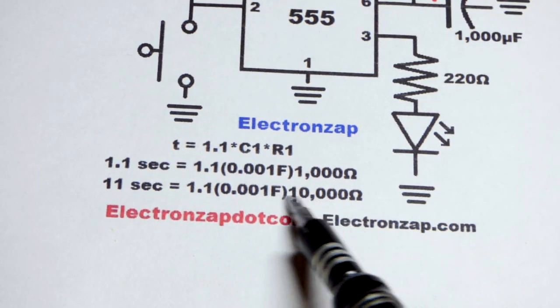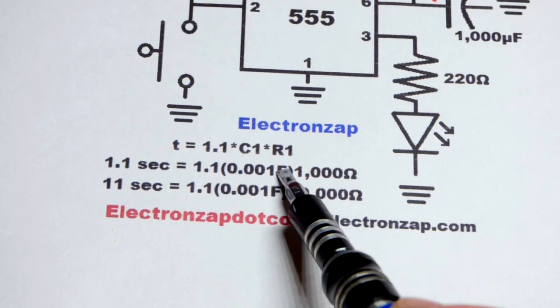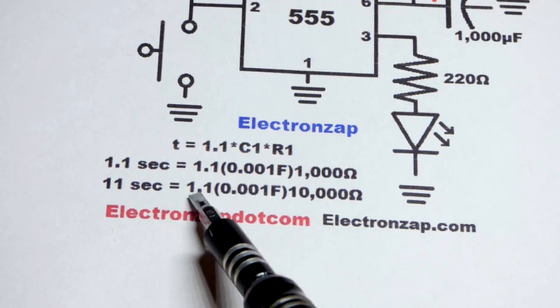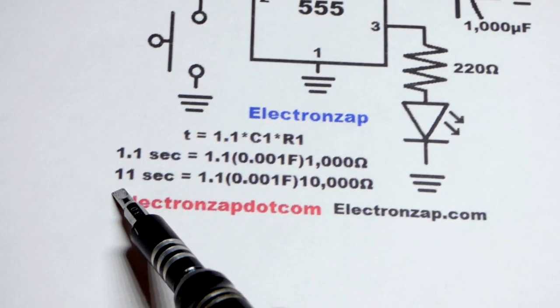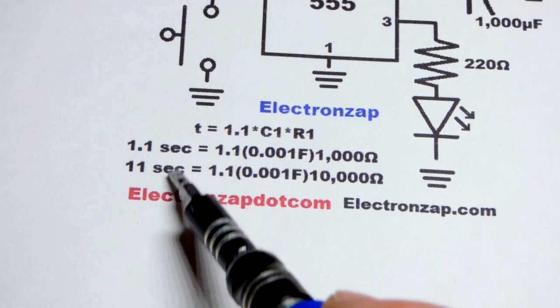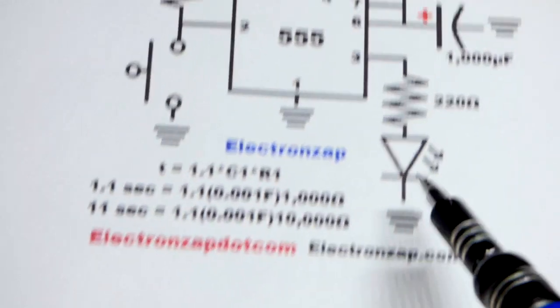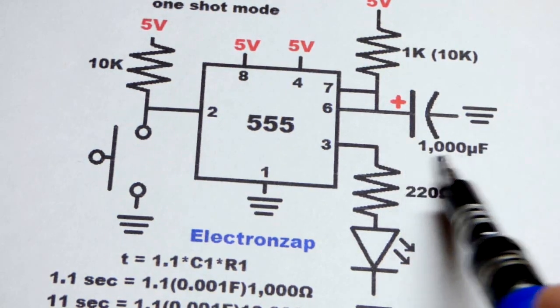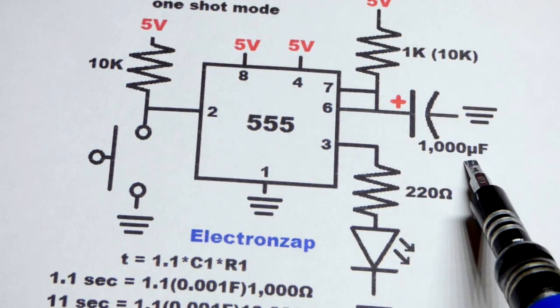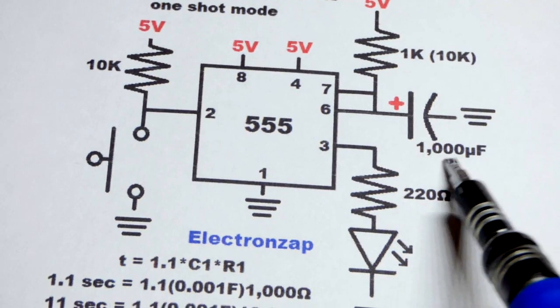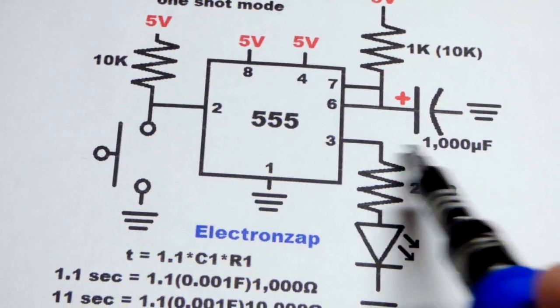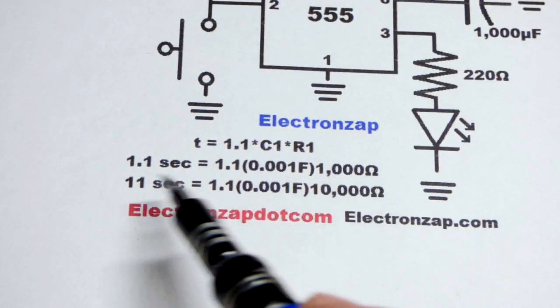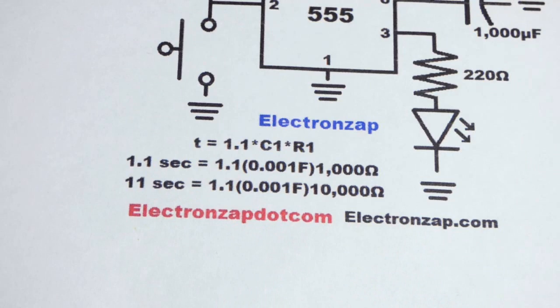So 0.001F times 1,000 ohms times 1.1 gives you 1.1 seconds. And 0.001F times 10,000 ohms times 1.1 gives you about 11 seconds. This is probably not going to be exact, especially because capacitors are usually not terribly close to their value. Resistors waver a bit too. So there's a number of factors that will change the timing slightly, but for the most part, this will be fairly accurate.